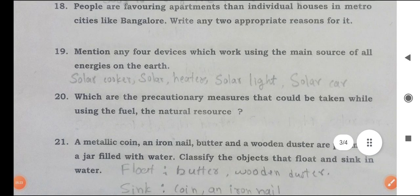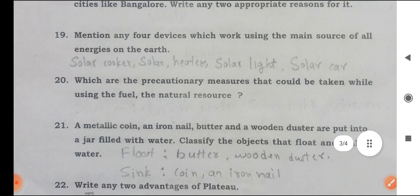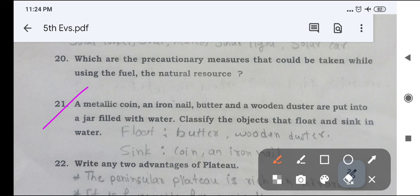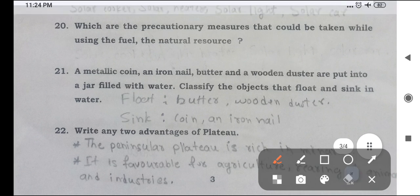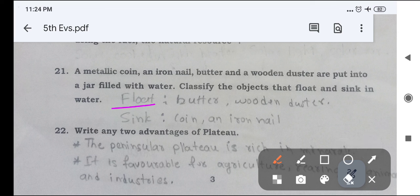Which are the precautionary measures that could be taken while using the fuel, the natural resource. Next question, 21, a metallic coin, an iron nail, butter and a wooden duster are put into a jar filled with water. Classify the objects that float and sink in water. First one, floating objects: butter, wooden duster. And sinking objects: coin and iron nail.